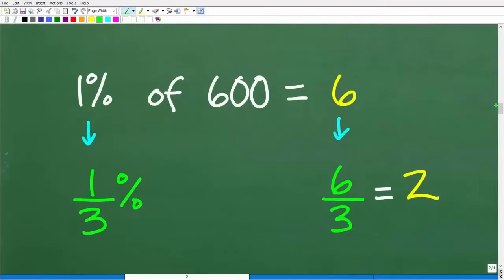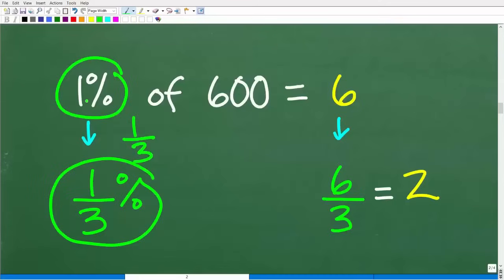So now we're going to take the next step and figure out what one-third percent of 600 is. Now that we know that 1% of 600 is six, let's finish this problem up. We went through and reviewed how to do that. The question is, what is one-third percent of 600? We have 1% and we want one-third percent. So how can I go from 1% to one-third percent? Well, just take that one and divide it by three.